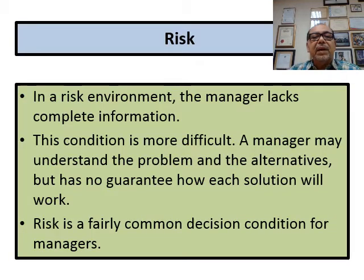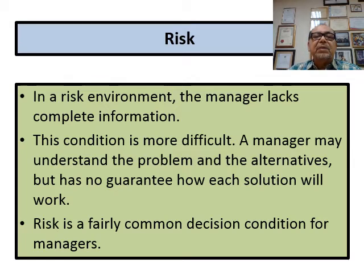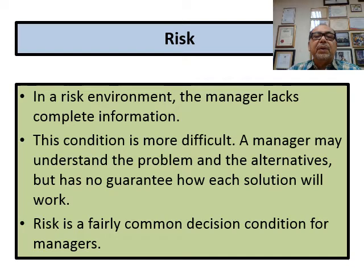In a risk environment, the manager lacks complete information. Risk only comes when you start implementing your decision. For example, in furniture manufacturing you need timber and various materials — in between there's always risk: you may not get the supply, workers may be unavailable, and so on. You cannot anticipate this risk; only when production starts do you see the problem. The manager may understand the problem and alternatives but there's no guarantee the solution will work.